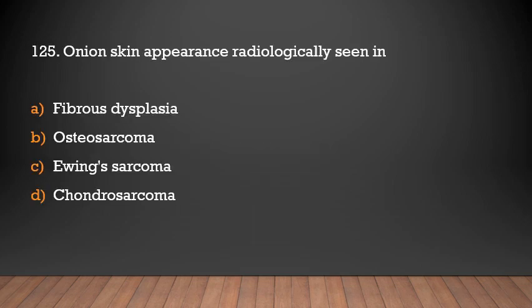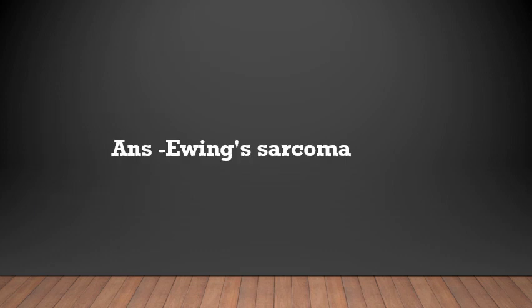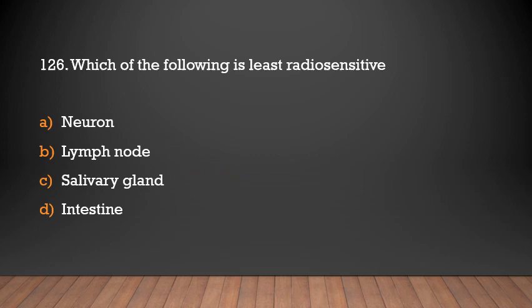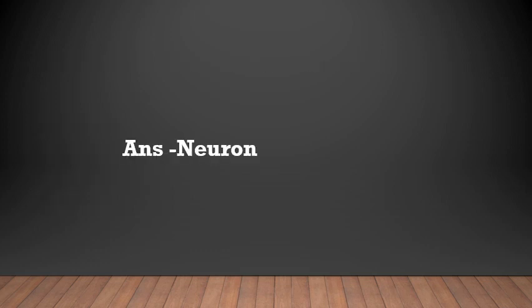Onion skin appearance radiologically is seen in: fibrous dysplasia, osteosarcoma, Ewing's sarcoma, or chondrosarcoma? Answer: Ewing's sarcoma. Which of the following is least radiosensitive: neuron, lymph node, salivary gland, or intestine? Neuron is the least radiosensitive.